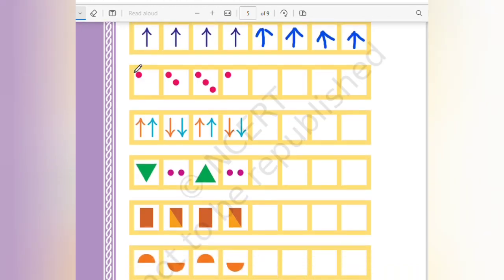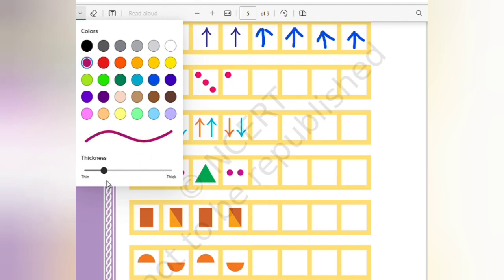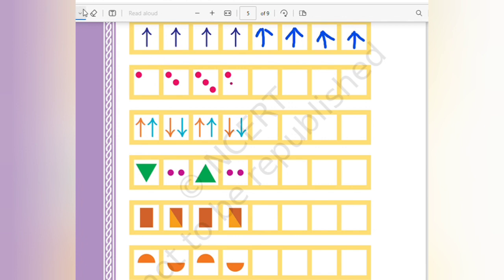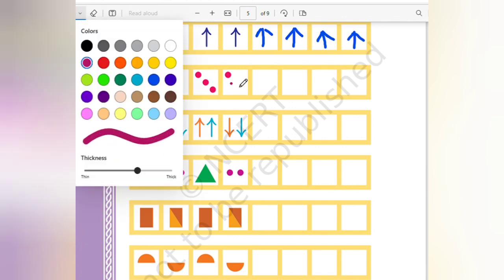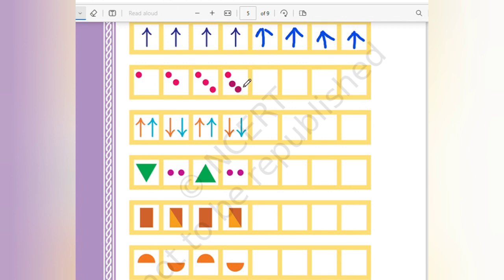In the next one, circle on the turn, two circles, three circles. So here it will be how many circles? Four circles. So one, two, three, four; one, two, three, four, five; one, two, three, four, five, six; one, two, three, four, five, six, seven; one, two, three, four, five, six, seven, eight.